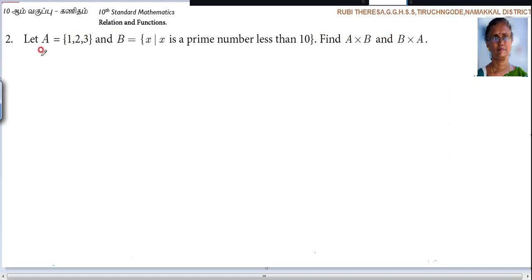A set is given. You have to find out the B set. A equal to 1, 2, 3. B equal to x is a prime number. What is meant by prime number? Prime number which has only two divisors, one and the number itself. So one is neither prime nor composite. Two is the only even prime number.